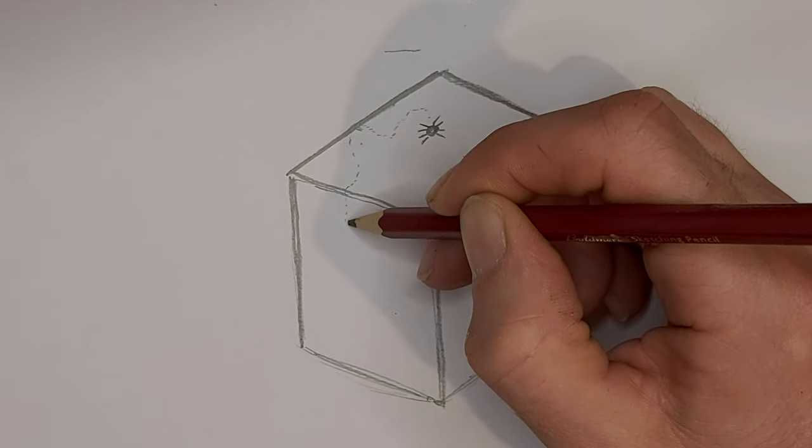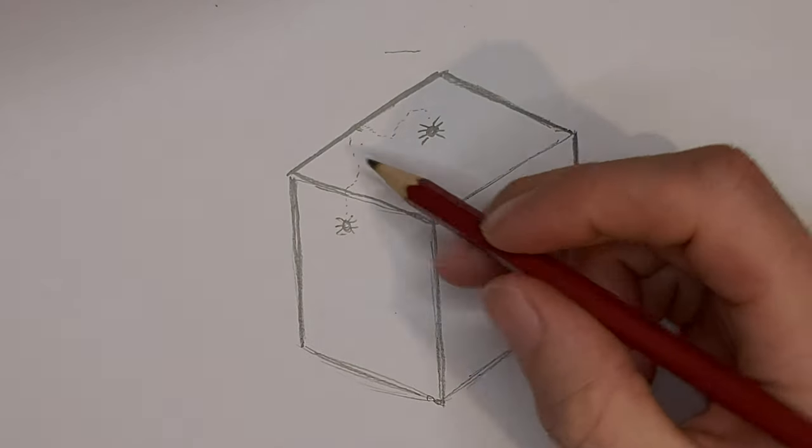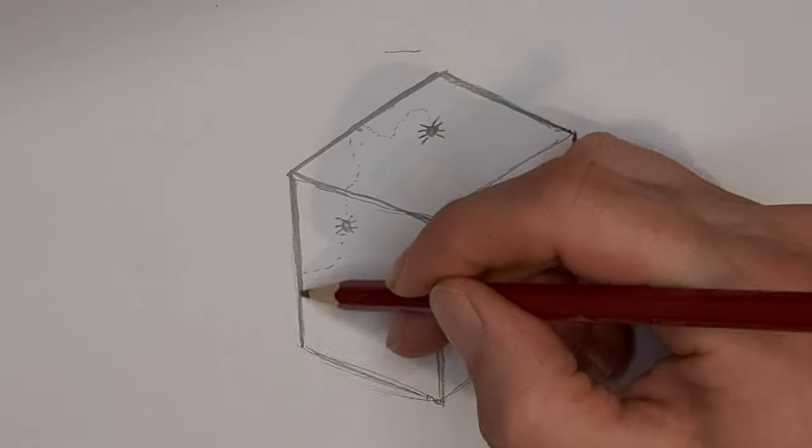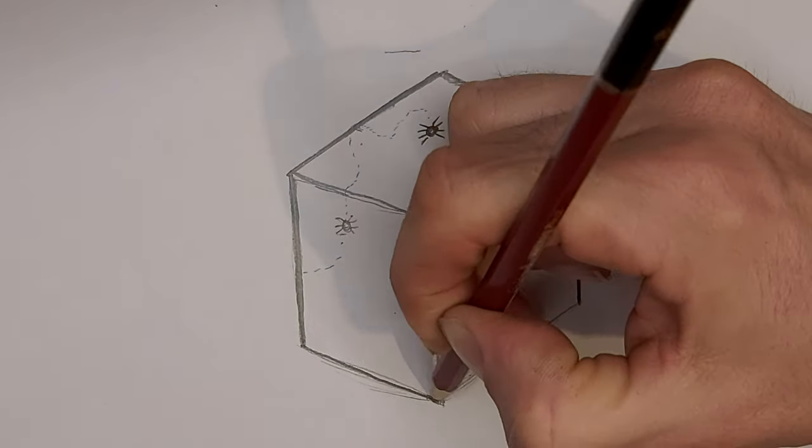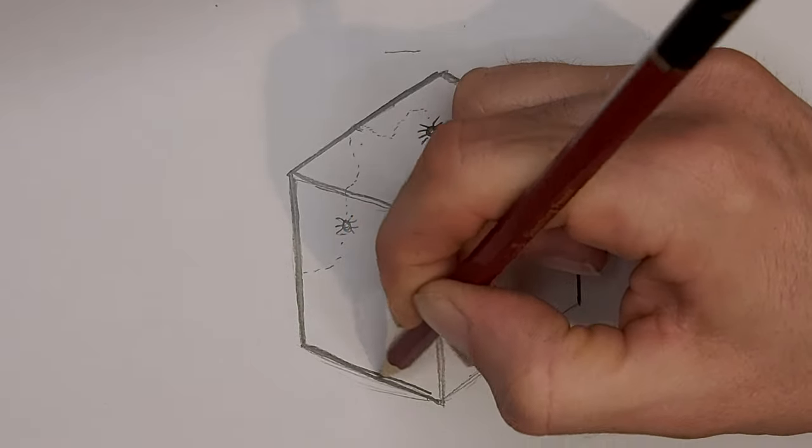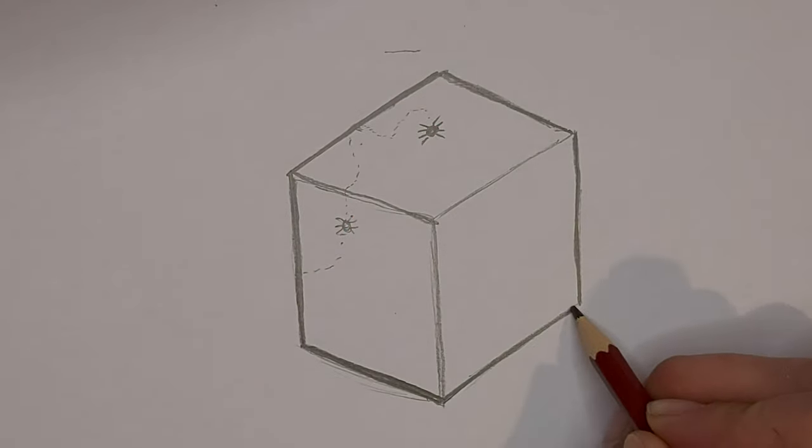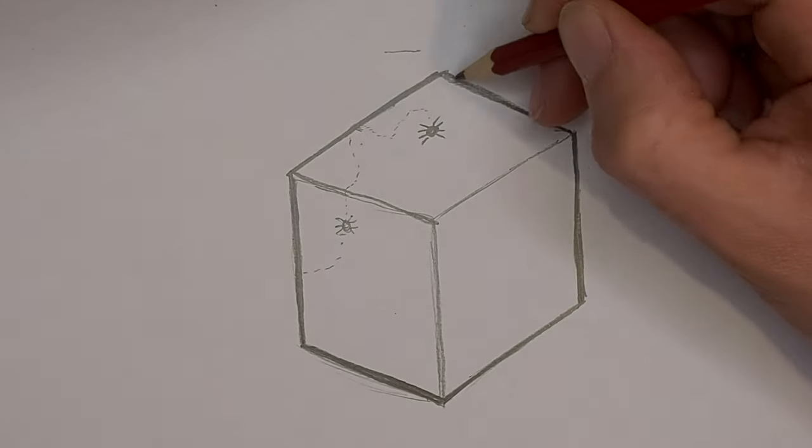You can still see the spider here, so that stays thin. If he went around here he would disappear, so that will be a thick line. Same for the bottom edge, and this edge, and this edge.